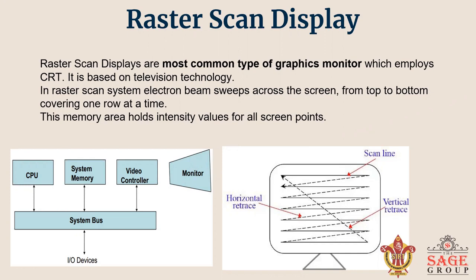In a raster scan system, the electron beam is swept across the screen one row at a time from top to bottom. As you can see in the diagram, the beam moves one row at a time from top to bottom — these are the lines.